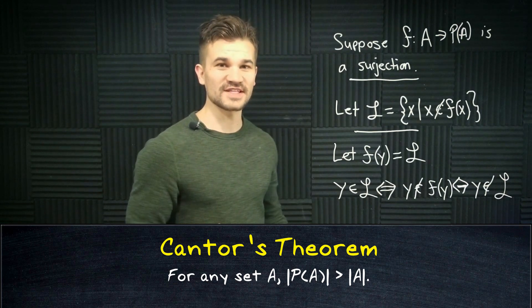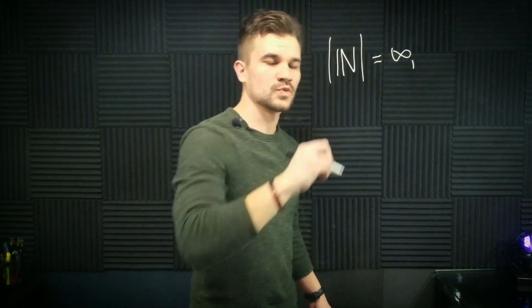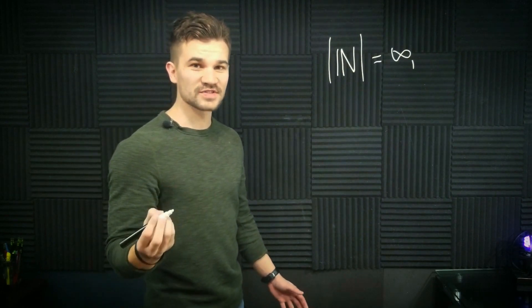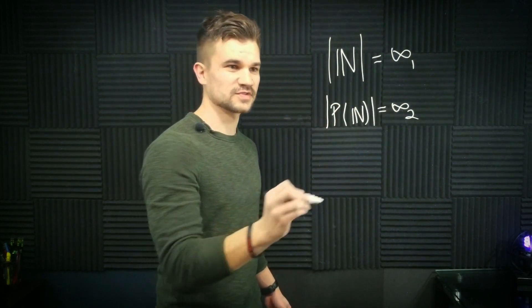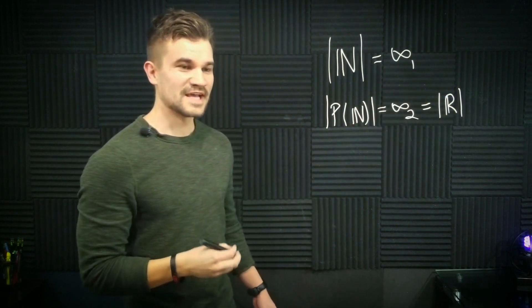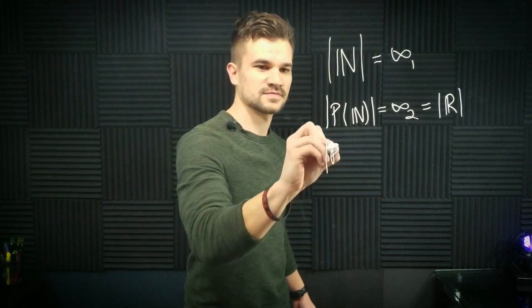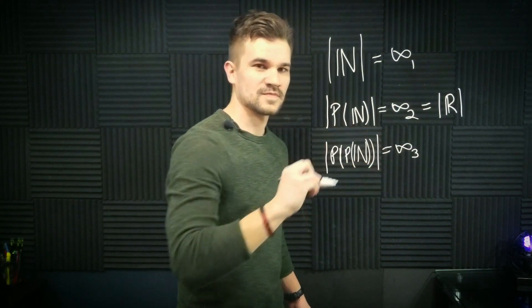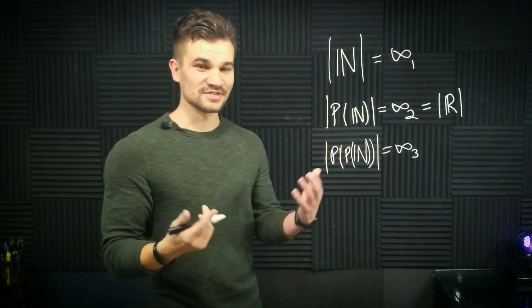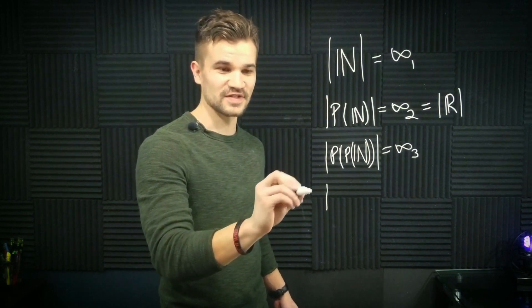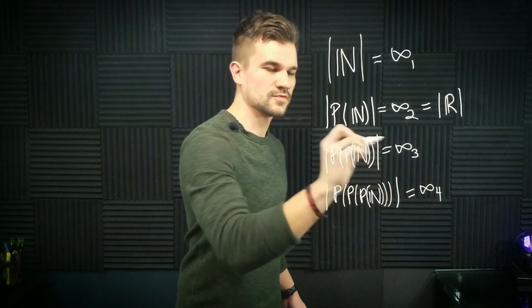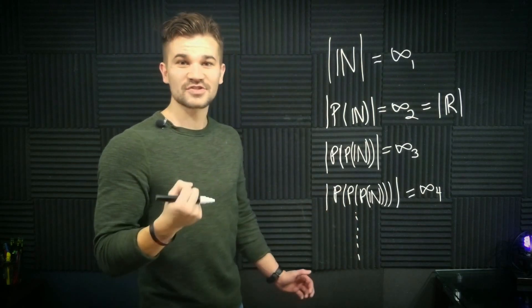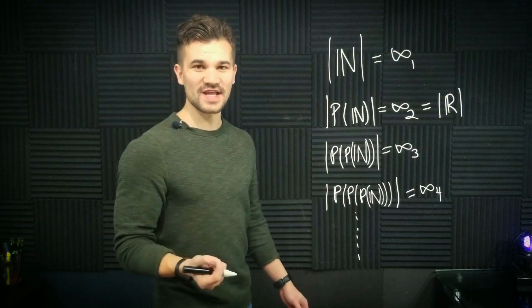Now armed with Cantor's theorem we can now generate sets of as large a cardinality as we'd like. So we can start with the natural numbers which we called infinity one. Then we can take the power set of the naturals for infinity two which is also the cardinality of the real numbers. Now we can take the power set of the power set of the naturals. That's infinity three. And then we can go a step further and take the power set of the power set of the power set of the naturals for infinity four. And we can do this indefinitely. So there's actually no limit to the size of infinity that we can create using Cantor's theorem.